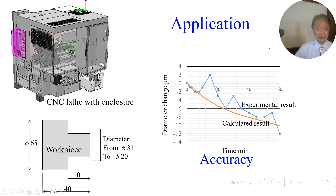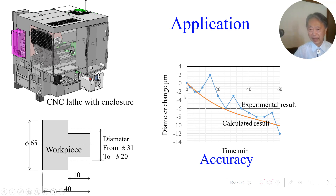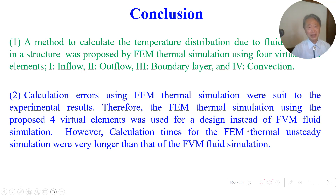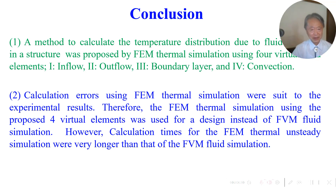This is an experimental application using this FEM on a CNC machine with enclosure. The workpiece is here. Machining time is shown once. This is the relationship between diameter change and time. Blue is experimental results and orange is calculation results — very close agreement. The new FEM thermal simulation using four virtual fluid elements was developed, and calculation errors were close to the experimental results.